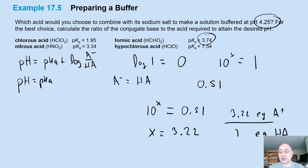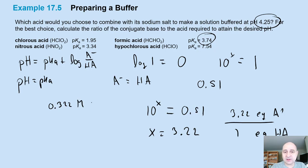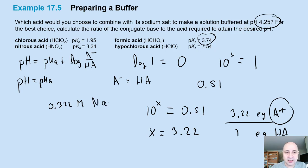We need 3.22 equivalents of base over 1 of the acid. So if you have 3.22 moles of conjugate base and 1 mole of acid, you accomplish that. You can have any ratio that achieves this — for example, 0.322 molar concentration of your conjugate base. A⁻ is generic here.